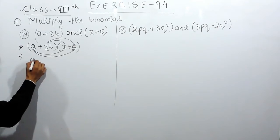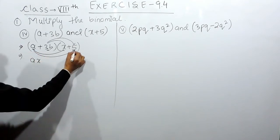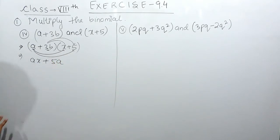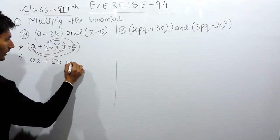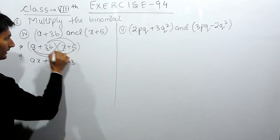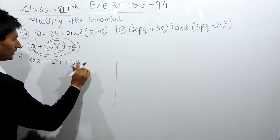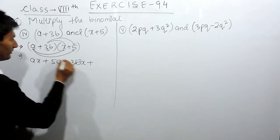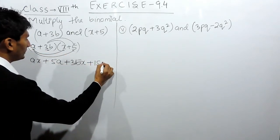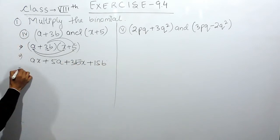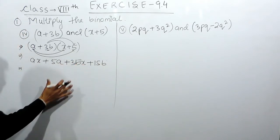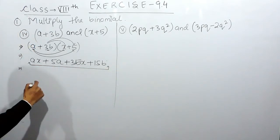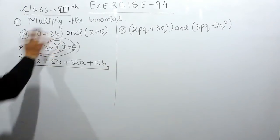So a multiplied by x is ax, a multiplied by 5 is 5a. These are unlike terms so they will remain as they are. Then 3b multiplied by x will give 3bx, and 3b multiplied by 5 will give 15b. This expression cannot be solved further because there are no like terms, so this will be the answer for this case.